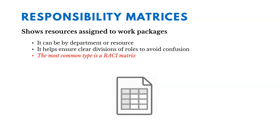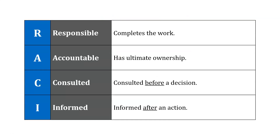A responsibility matrix shows resources assigned to work packages — who's going to do what. It can be by department or resource, and it helps ensure clear divisions of roles to avoid confusion. It's also known as a responsibility assignment matrix, or RAM. The most common type is a RACI matrix, which stands for responsible, accountable, consulted, and informed.